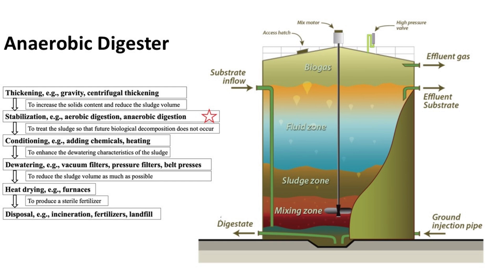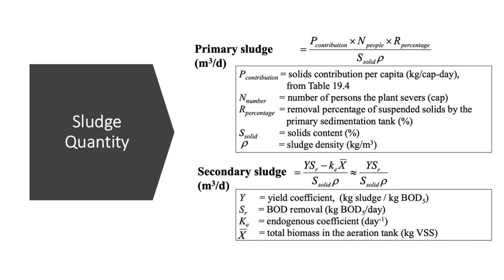In this video, we will focus on two calculations related to anaerobic digesters. First is estimating the quantity of sludge generated from wastewater treatment primary and secondary processes. Second is calculating the volume of an anaerobic digester. To calculate the sludge quantity, two equations are used together — one for primary sludge and one for secondary sludge.